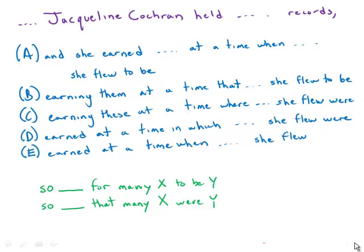In this one about the pilot Jacqueline Cochran, there's a split between two ways of constructing the comparison. I've isolated this down here. A and B follow the first one; C, D, and E follow the second one.